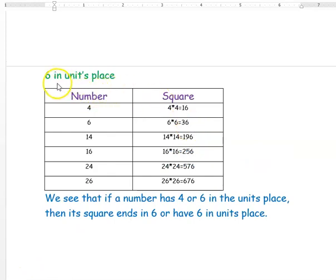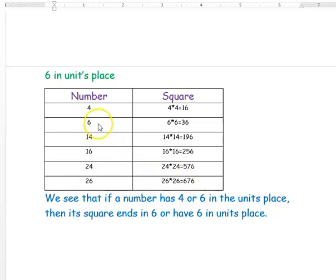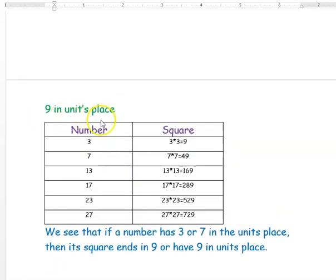Similarly, we will see the number 6 in the units place of a square number. If you take number 4, its square is 16. If you take number 6, its square is 36. If you take number 14, its square is 196. If you take number 16, its square is 256. If you take number 24, its square is 576. If you take number 26, its square is 676. So if the units digit of a number is 4 or 6, its square will end with 6 in its units place.